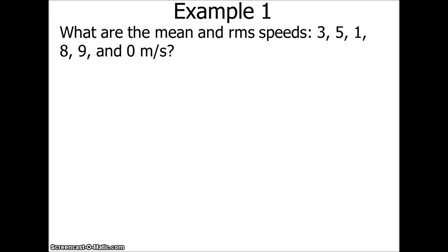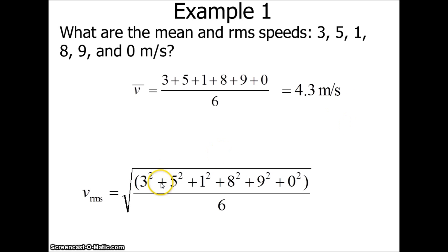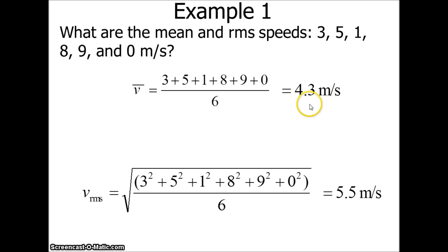Let's do examples with root mean square speed. With speeds of 3, 5, 1, 8, 9, and 0, the mean speed is (3+5+1+8+9+0)/6 = 4.3 m/s. For RMS speed, first square each value, then find the average, then take the square root — giving 5.5 m/s. The 4.3 m/s is not related to internal energy or temperature; it's the 5.5 m/s that is related to both.